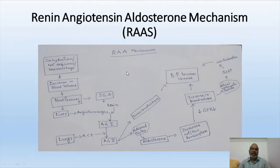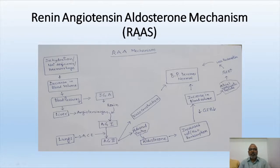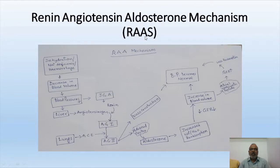The juxtaglomerular apparatus consists of juxtaglomerular cells, smooth muscle fibers, and the macula densa — a group of cells of the distal convoluted tubule. These three together constitute the juxtaglomerular apparatus. This apparatus secretes a hormone called renin (also a renin enzyme) to regulate the glomerular filtration rate. This system is called the renin–angiotensin–aldosterone (RAA) system of regulation.